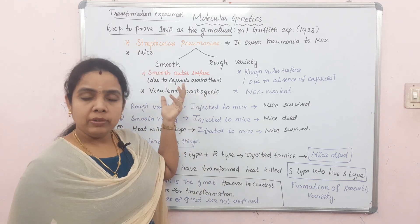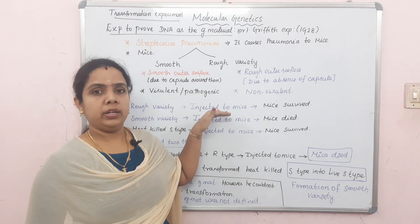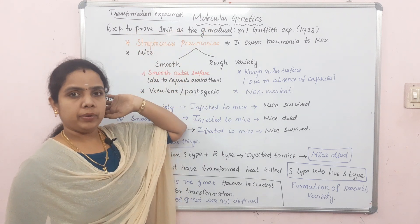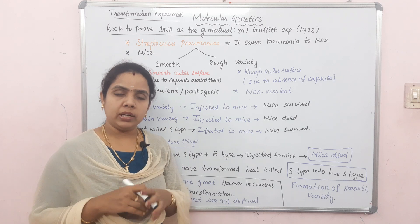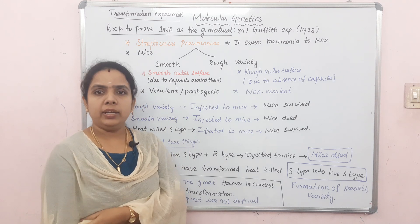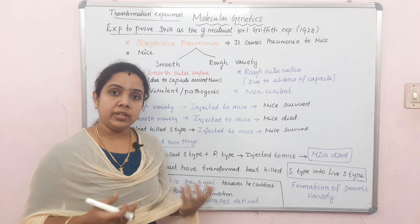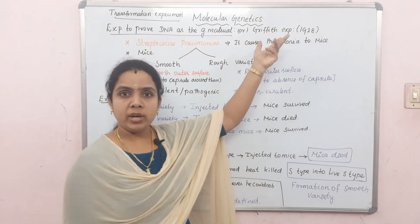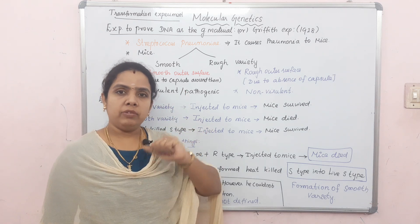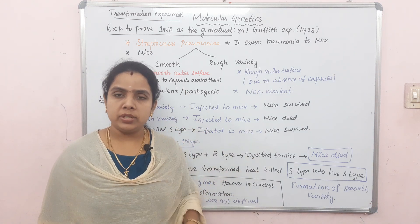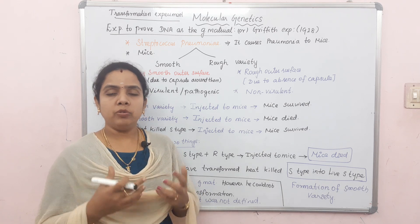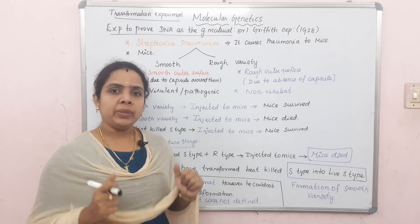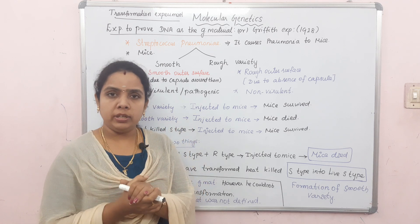What is the first experiment in this lesson? It is a very important topic. The first experiment is to prove DNA as a genetic material. Now as students, we know that our genetic material is DNA. But in those earlier times, scientists studied experiments from 1928 to find out what information or characters are transferred from one generation to another — whether it was proteins, RNA, or DNA.